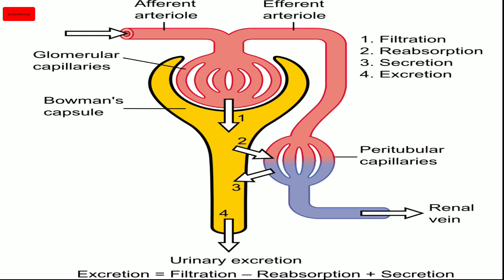The formula for excretion is: Excretion = Filtration minus Reabsorption plus Secretion. Reabsorption is subtracted because substances like amino acids, water, glucose, calcium ions, and potassium ions are reabsorbed and not removed from the body. Excretion is basically the removal of nitrogenous waste products. Secretion is added because the substances secreted are nitrogenous in nature, adding to the waste being excreted.